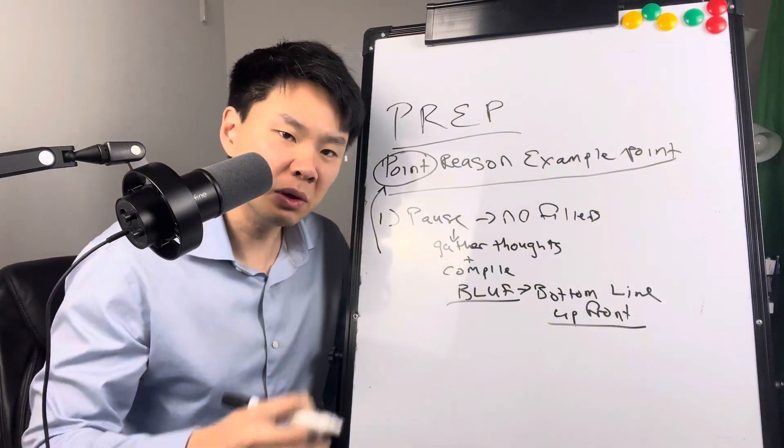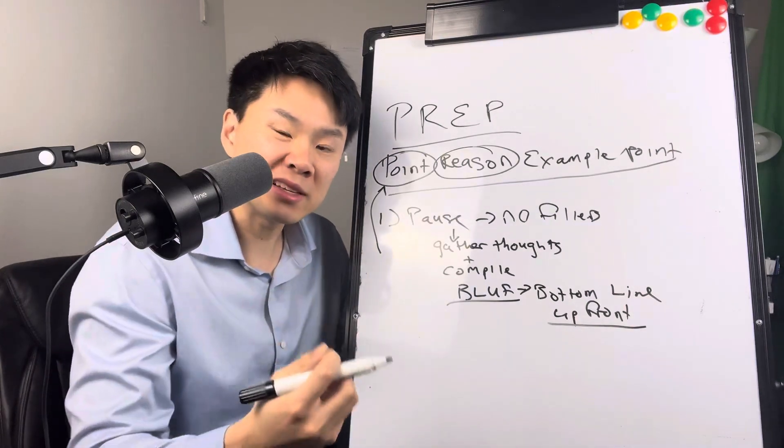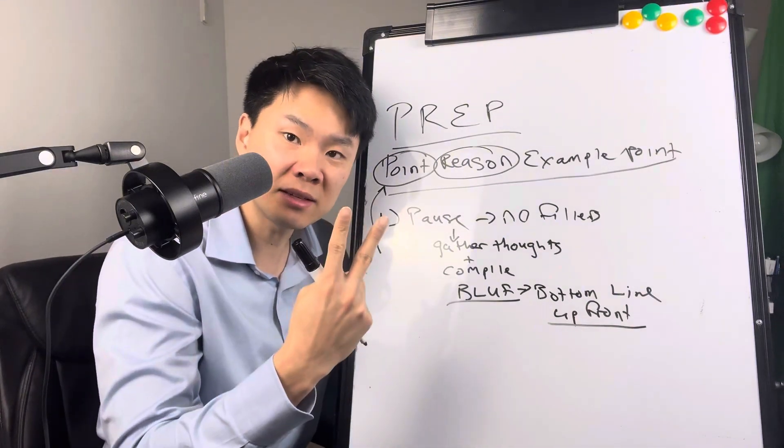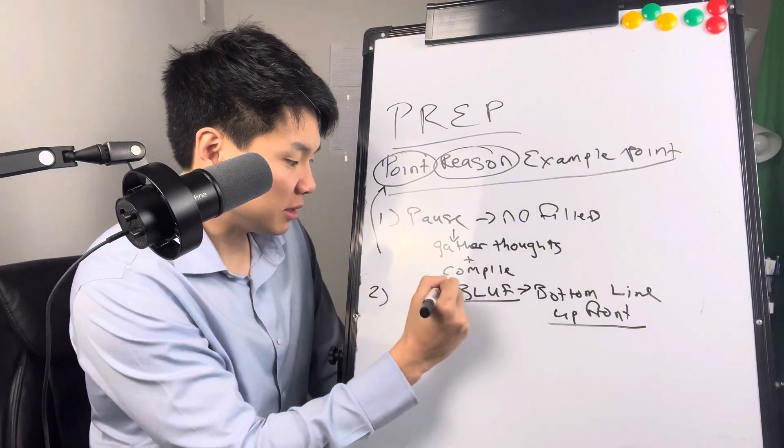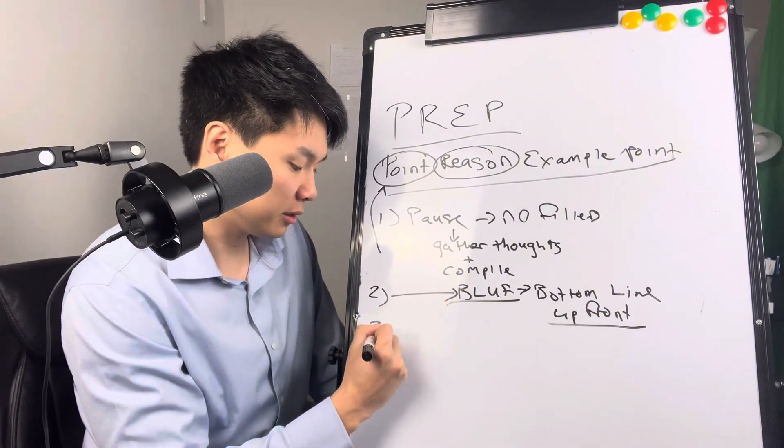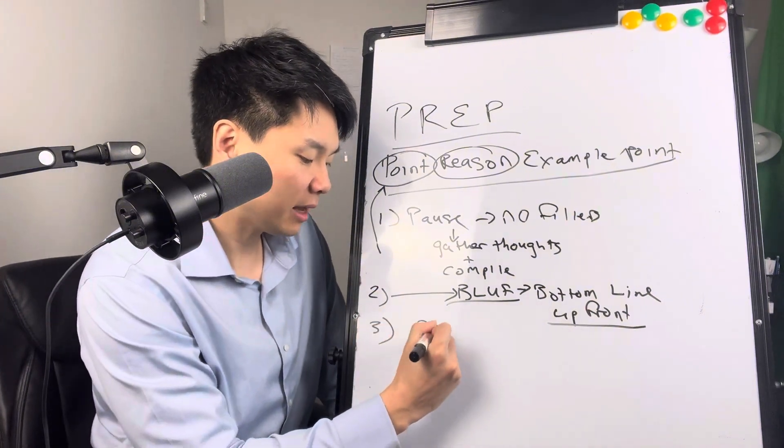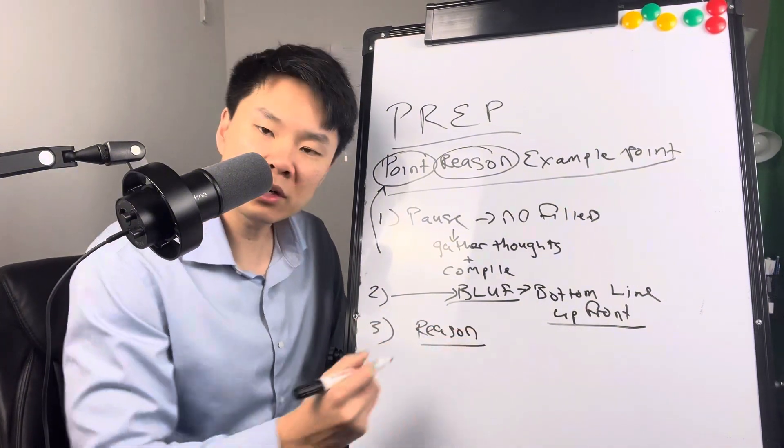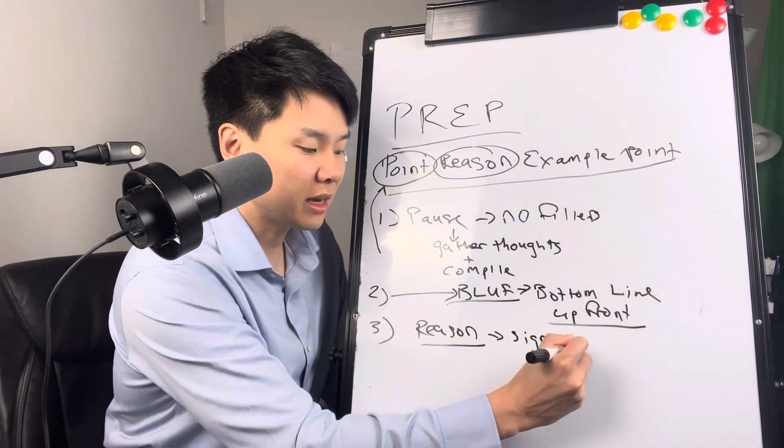The next thing we do is we then say the reason. Now, how can we keep this reason tight in one or two sentences? What you can do after you've given the BLUFF, that's the second point. The third is, you should come up with that reason. And that reason, again, one or two sentences, you can signpost it.